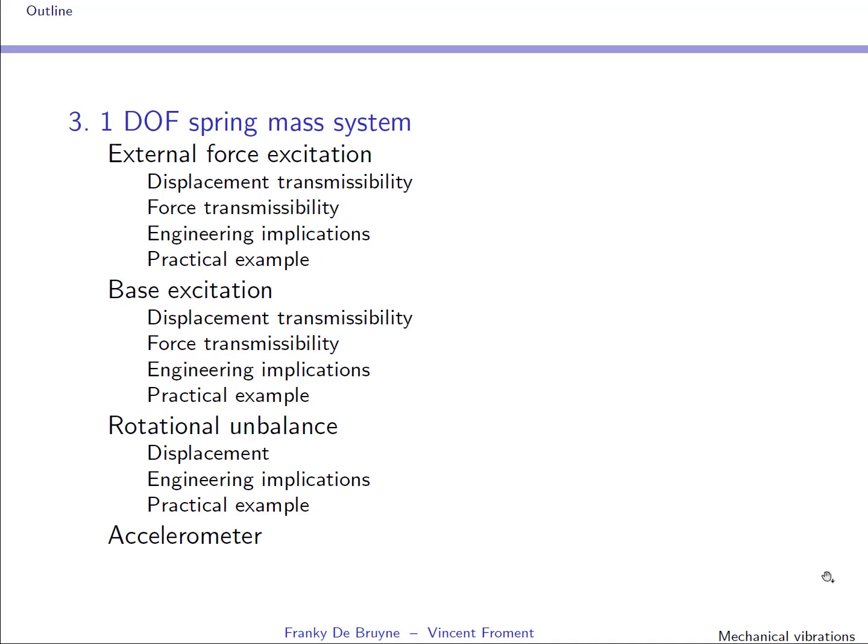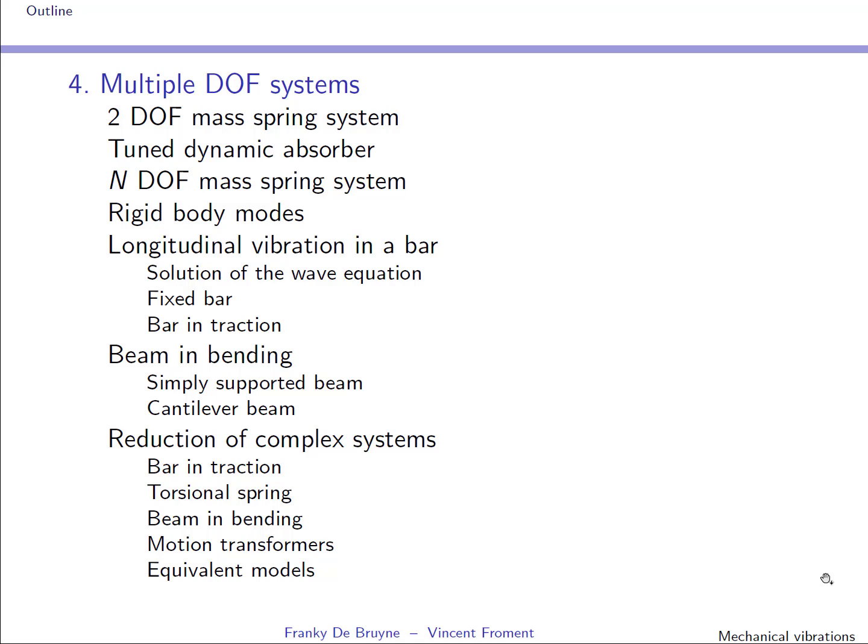In the third section, we look at the one degree of freedom spring-mass system and consider different sources of excitation: external forces, base excitation, and rotational imbalance. Then we look at the engineering implications and how we can mitigate the effects of vibration. The next section is about multiple degrees of freedom systems, starting with two and n degree of freedom systems, then going to bodies which are continuous in nature and have an infinite number of degrees of freedom.